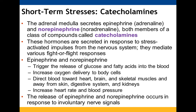During fight-or-flight, epinephrine and norepinephrine help generate energy by triggering glucose and fatty acids for respiration. Blood is directed toward the heart, brain, and skeletal muscles, and away from skin, the digestive system, and kidneys — things that are important but not essential to survive at that instant. Heart rate and blood pressure increase, and these responses occur in response to involuntary nervous signals.